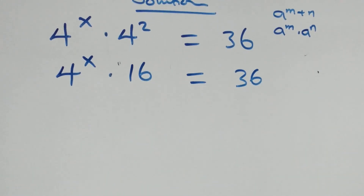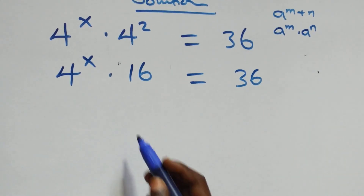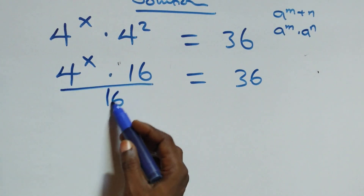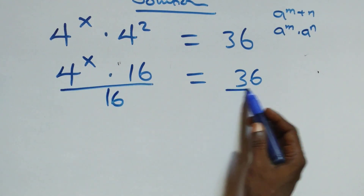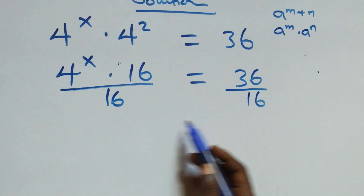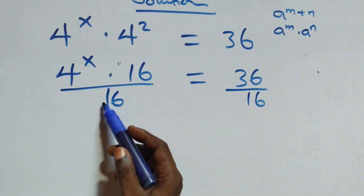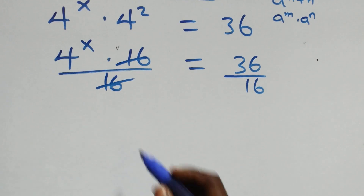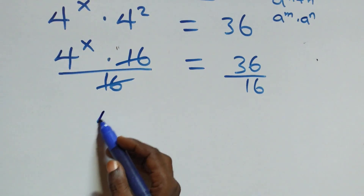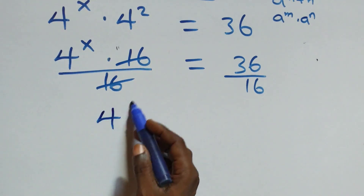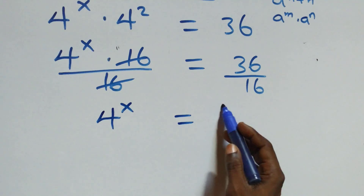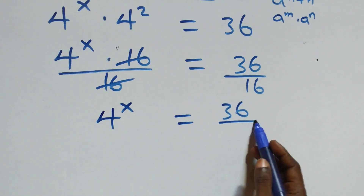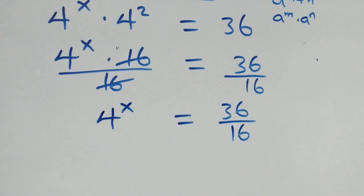The next step, we divide this side by 16, and also divide the other side by 16. The 16s cancel each other, and we have 4 raised to the power x left, which equals 36 over 16.